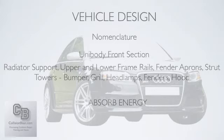You also have the fender aprons — that's what the fender bolts onto — so you're going to have a right apron and a left apron with the strut towers where your struts bolt in. Your bolt-on parts are the bumper, grill, headlamps, fender, and hood. That basically consists of your front section, and again the front area of your car is designed to absorb energy, and that's done with crush zones.